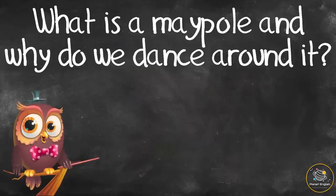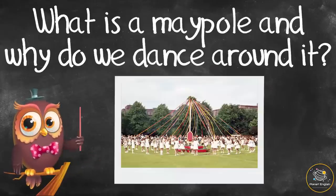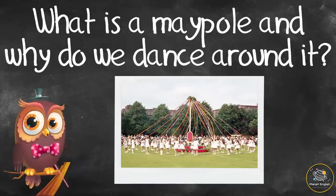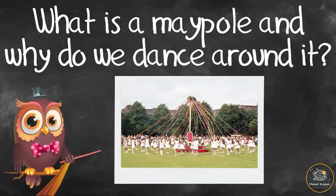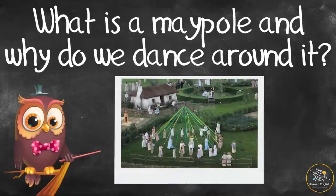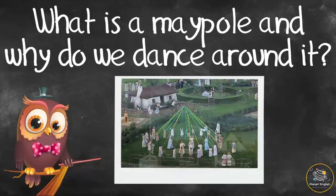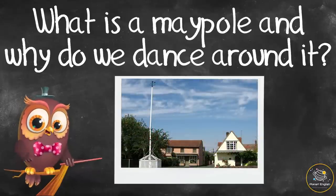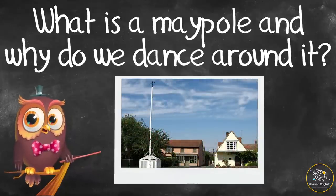What is a maypole and why do we dance around it? A maypole is a tall wooden pole around which people would dance, holding onto colourful ribbons. They originated in the 14th century and became symbols that brought the local community together. In the Middle Ages, all villages had maypoles, and towns would compete to see who had the tallest or best maypole.